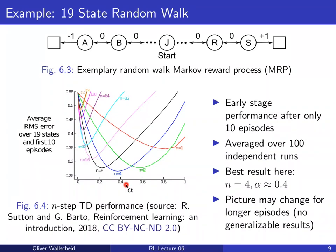It should also be stressed that using alpha=0.4 as a constant learning rate may not be optimal. The rule of thumb is to start with a rather large alpha to speed up early-stage learning, and then reduce it to smaller values as we converge to steady-state estimation. There are specific transition rules for alpha that guarantee convergence to the true value, and we should take that into account in real-world applications.